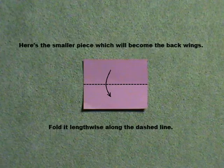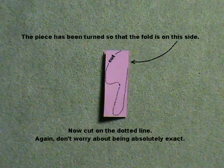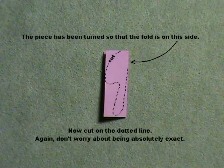Fold it lengthwise along the dashed line. The piece has been turned so that the fold is on this side. Now cut on the dotted line. Again, don't worry about being absolutely exact.